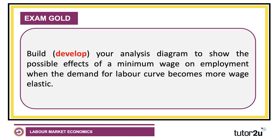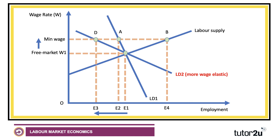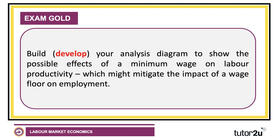My focus this year is on trying to get students to develop their analysis diagrams. What we've got there is fine, but you could probably develop it one stage further. For example, if the labor demand curve is more wage-elastic — LD2 is a much more wage-elastic demand curve — where employment is more sensitive to an increase in the minimum wage, employment falls not from E1 to E2 but from E1 to E3. There's a bigger fall in employment, and you can use that analysis to discuss whether workers actually benefit: yes, some people get higher pay per hour, but there could be a hefty contraction in the number of people actually employed.